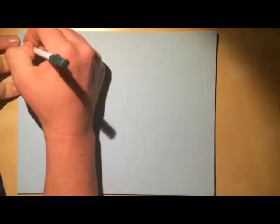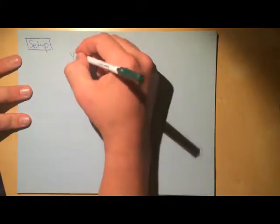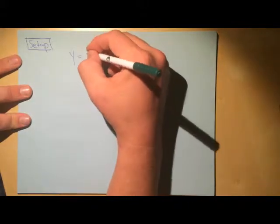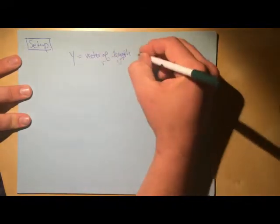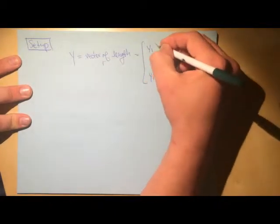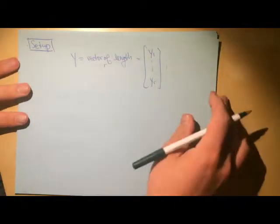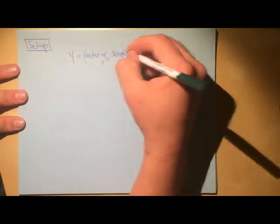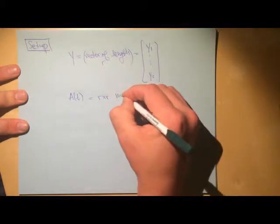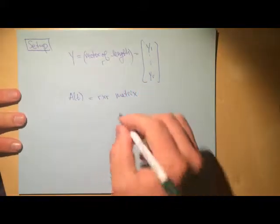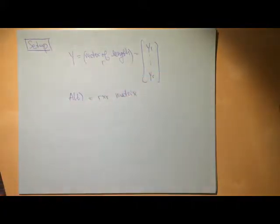I want to do a series of videos on connections, so let's start with the most basic setup. Y is going to be a column vector which depends on a parameter t — a vector of length r, so it looks like Y1 to Yr, each being a function of t. Then A(t) will be an r by r matrix.